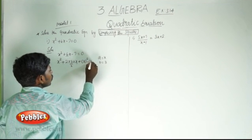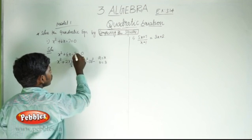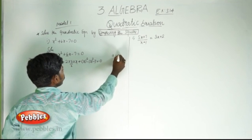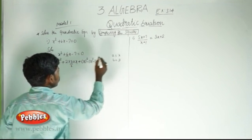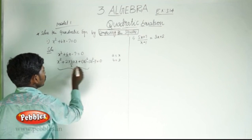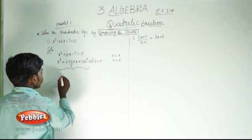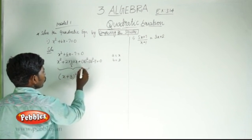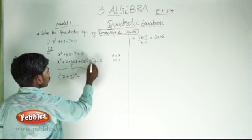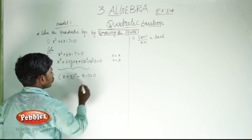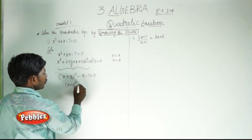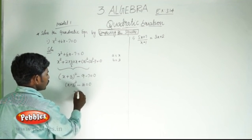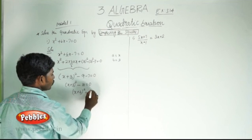Now we neutralize by adding another 3 squared and minus 7 is equal to 0. Here a is equal to x, b is equal to 3, so a squared plus 2ab plus b squared is the expansion of (a plus b) whole squared. So (a plus b) whole squared minus 3 squared, which is 9, minus 7 is equal to 0. Then (x plus 3) whole squared minus 9 minus 7, that is minus 16, is equal to 0. Then (x plus 3) whole squared is equal to plus 16.